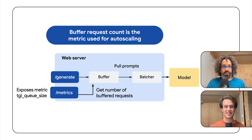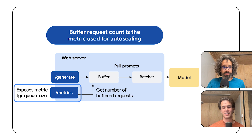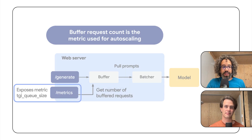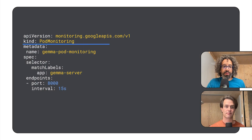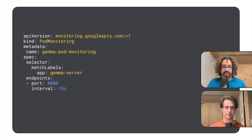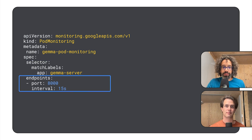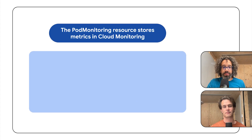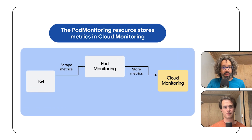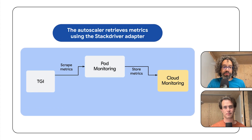But how does the autoscaler have access to that metric — does it call the metrics endpoint directly? The autoscaler doesn't directly call the endpoint. I configured a pod monitoring resource and told it to target the TGI deployments and scrape the metrics from port 8000. The pod monitoring resource stores the metrics in Cloud Monitoring, and the autoscaler retrieves them from there.